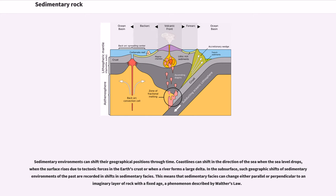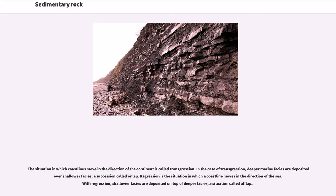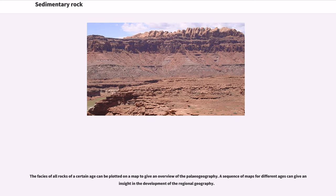Sedimentary environments can shift their geographical positions through time. Coastlines can shift in the direction of the sea when the sea level drops, when the surface rises due to tectonic forces, or when a river forms a large delta. Such geographic shifts are recorded in shifts in sedimentary facies, a phenomenon described by Walther's Law. The situation in which coastlines move in the direction of the continent is called transgression, in which deeper marine facies are deposited over shallower facies — a succession called onlap. Regression is when a coastline moves toward the sea, with shallower facies deposited on top of deeper facies, called offlap. The facies of all rocks of a certain age can be plotted on a map to give an overview of paleogeography.